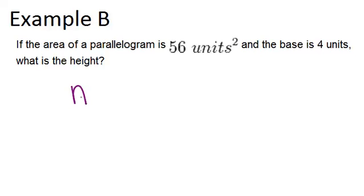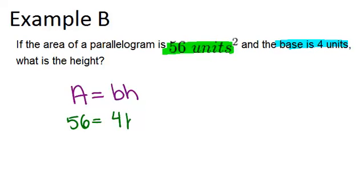So remember that the area of a parallelogram is always base times height. So if we know two things, we know the area is 56 units squared, and we know that the base is 4 units, we can substitute those two pieces of information into the formula. So 56 is our area, and 4 is our base, and we're trying to figure out our height. So we can just solve this equation by dividing both sides by 4.